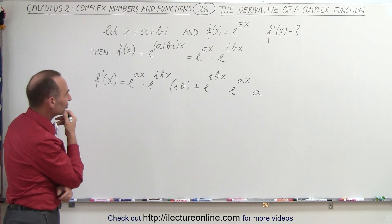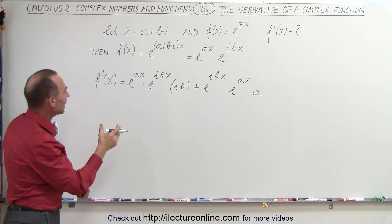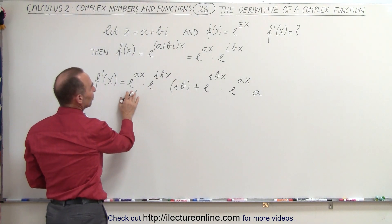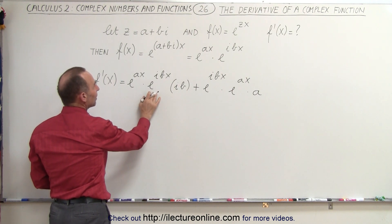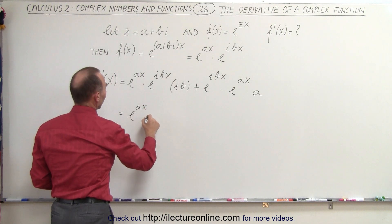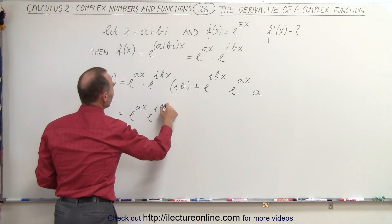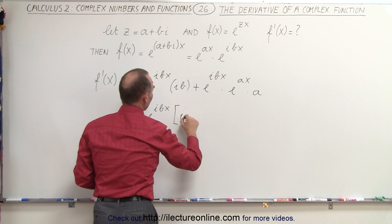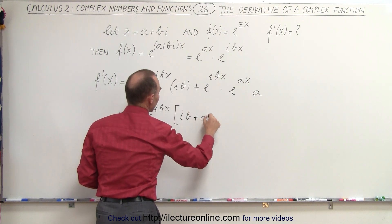Now, can we factor something out here? And it looks like we can. Again, we can factor out an e to the ax and an e to the ibx. So this becomes e to the ax times e to the ibx, and then we have left an ib plus a.